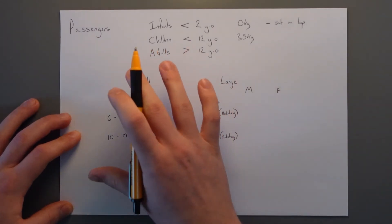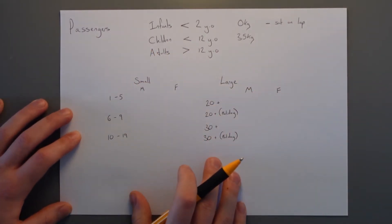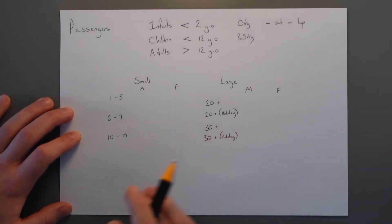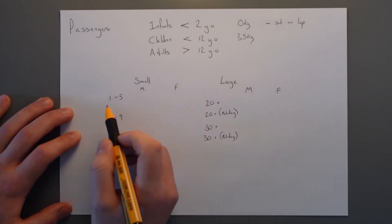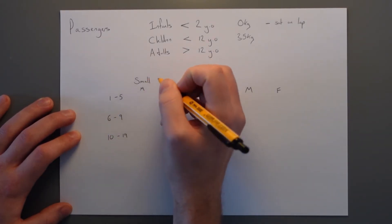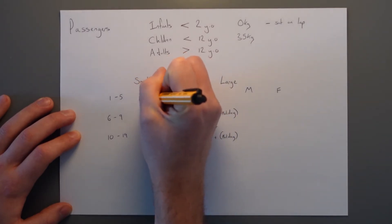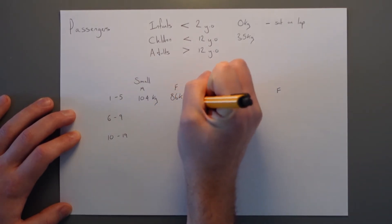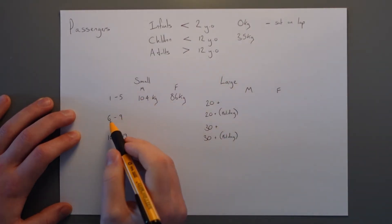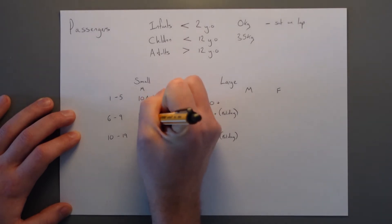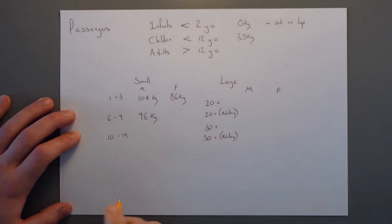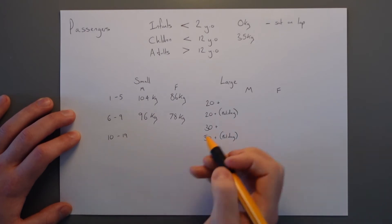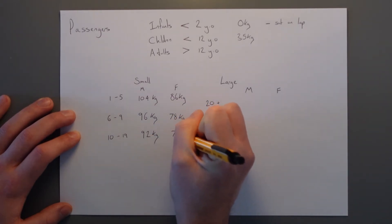Then you get into the breakdown of how much adults weigh according to standard mass. So again, you could always just weigh everybody, but using the standard masses is thought of as a lot quicker and you don't have to weigh every single person. So for small aircraft with one to five seats, for men or male 104 kilograms, female 86 kilograms, for a small aircraft with six to nine seats, male 96 kilograms and female 78 kilograms. Small aircraft 10 to 19 seats, we have 92 kilograms and 74 kilograms.